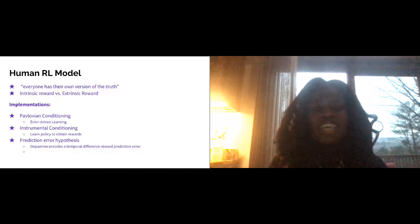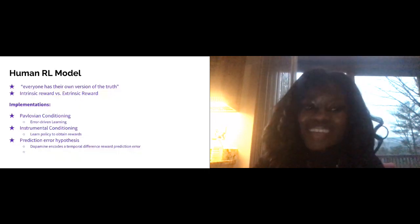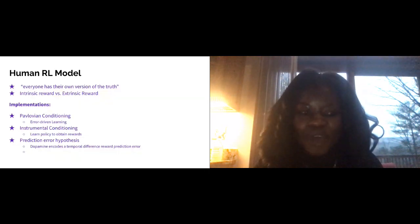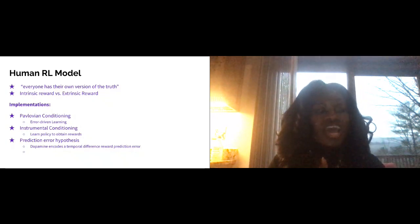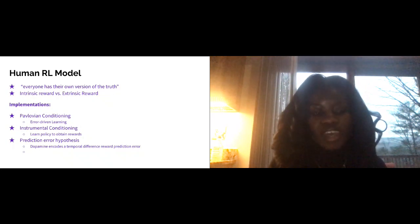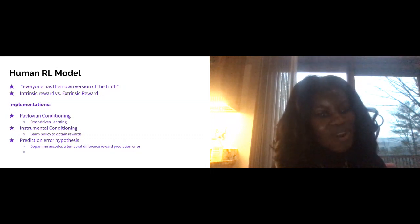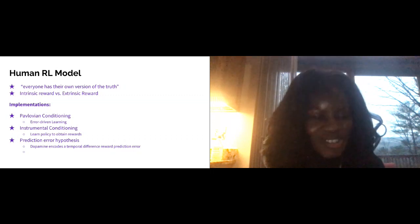Not a fully representational model, not exact x to y, but maybe correlational models, translational models that better allow for learning in between the error making itself. That's a quick overview of the human RL model, rewards versus punishments, and now I'll take any questions.